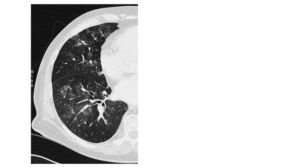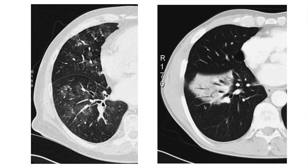Here we can see mild involvement with increased attenuation visible across the lung, but not associated with obscuring of blood vessels and airways — they are all clearly visible. This is ground glass opacity. In consolidation, bronchial and vascular markings are gone, though the lumens of the bronchi may still be visible. These are called air bronchograms, which are more pathognomonic of consolidation.